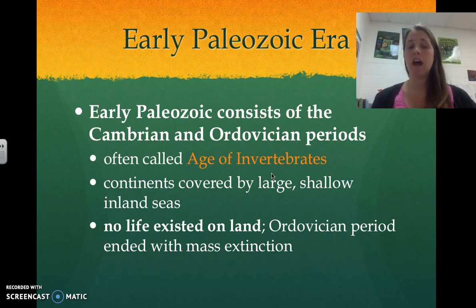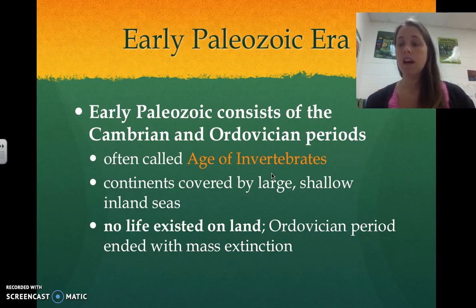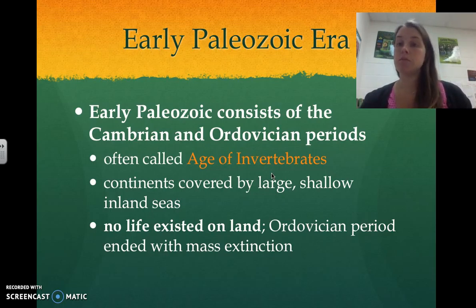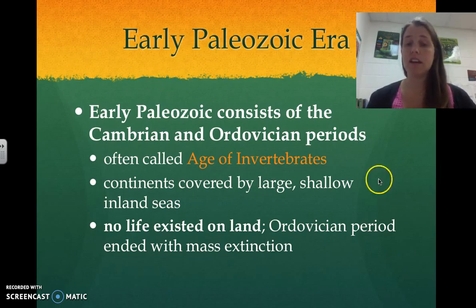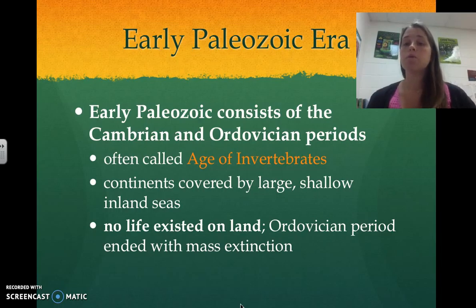There was very little land, so no life existed on land. Remember, each of these periods ends with a giant change in fossils, which usually means some sort of extinction event. So when the early Paleozoic was over, it ended with a mass extinction, and most of the invertebrates that lived during this time went extinct.